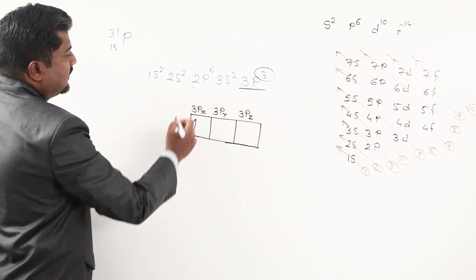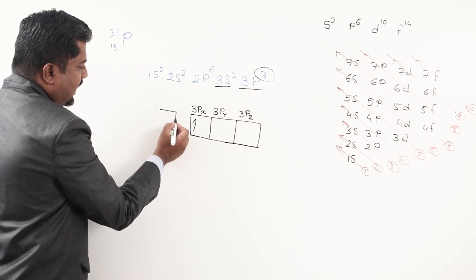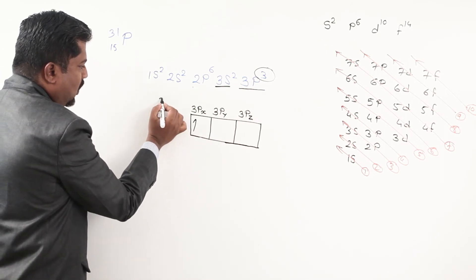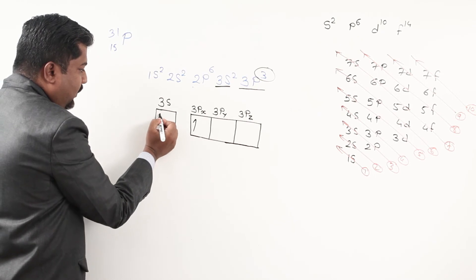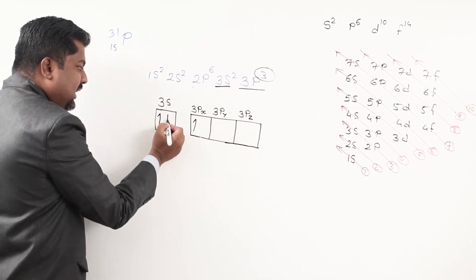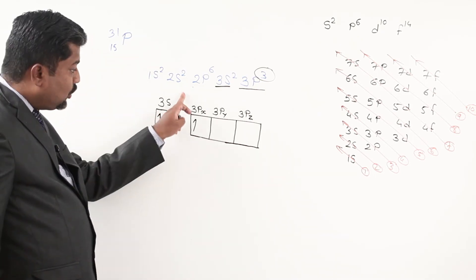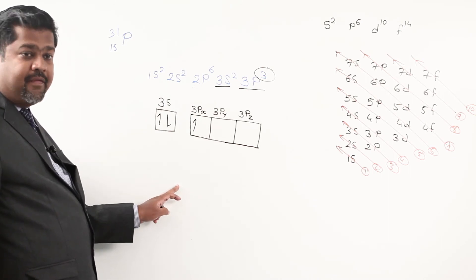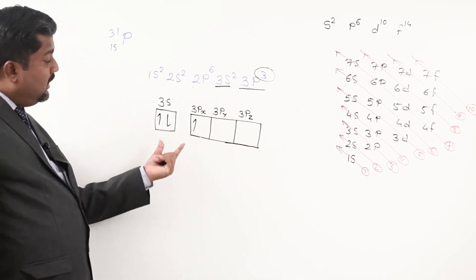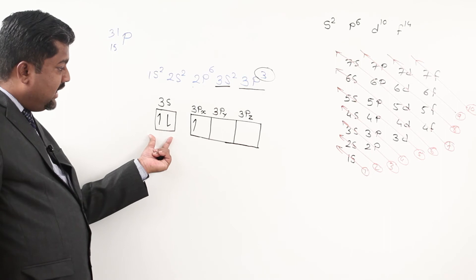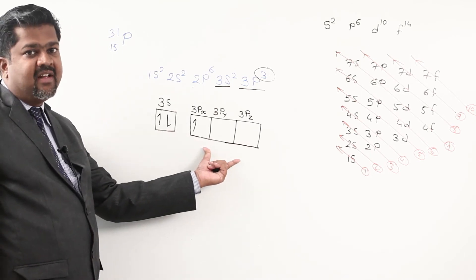So here I am showing 3s2 — that is 3s orbital — first electron is here, second electron is here. There is a gap between 3s and 3p because they are not degenerate: 3s has different energy from 3px, 3py, 3pz. Those three p orbitals are degenerate with each other — they have the same energy.